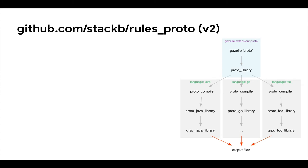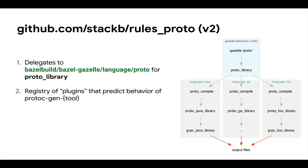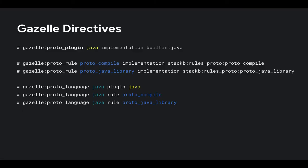Here's the repository — it's called stack-rules-proto-v2. It delegates to the built-in Gazelle extension, which has one responsibility: generating the proto_library rule. Then this extension maintains a registry of plugins, and those plugins mirror the behavior of their corresponding tool. It has a registry of rules — these are the little factories that produce the things that Gazelle merges into the build file. You take these plugins and rules and configure them as a language, and that language determines, on a proto_library basis, the child rules that are generated.